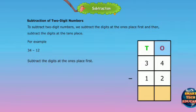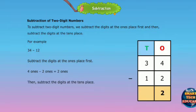Subtract the digits at the ones place first. 4 ones minus 2 ones equals 2 ones. Then subtract the digits at the tens place. 3 tens minus 1 ten equals 2 tens.